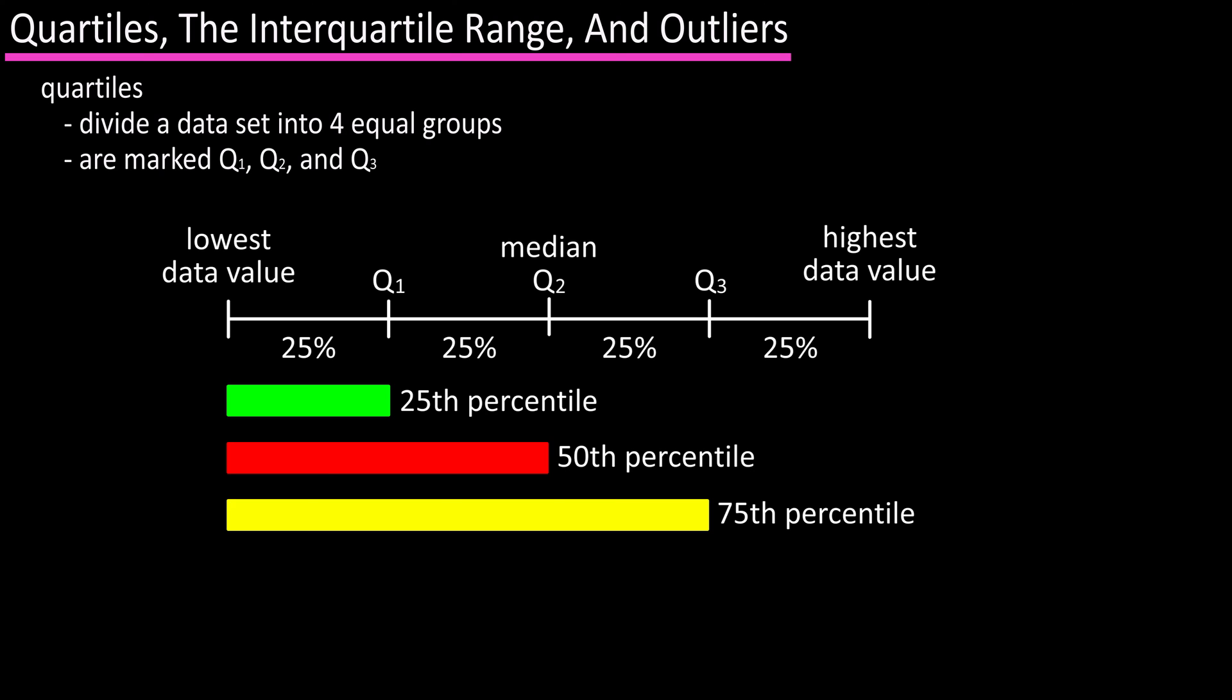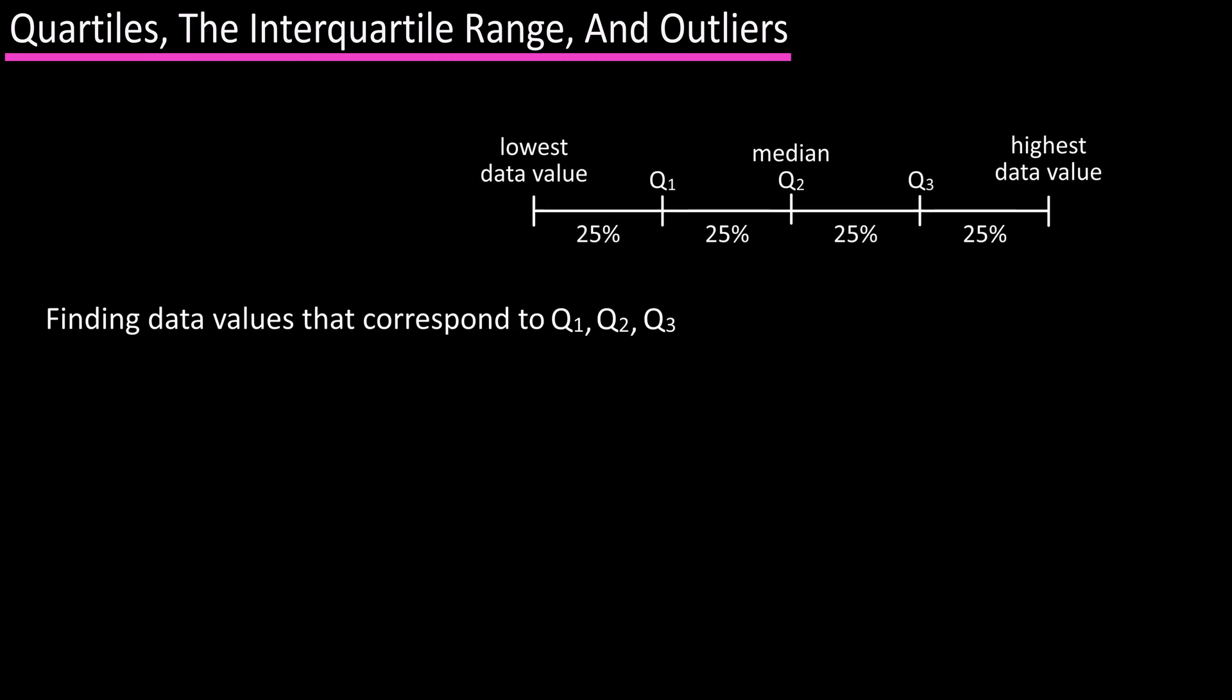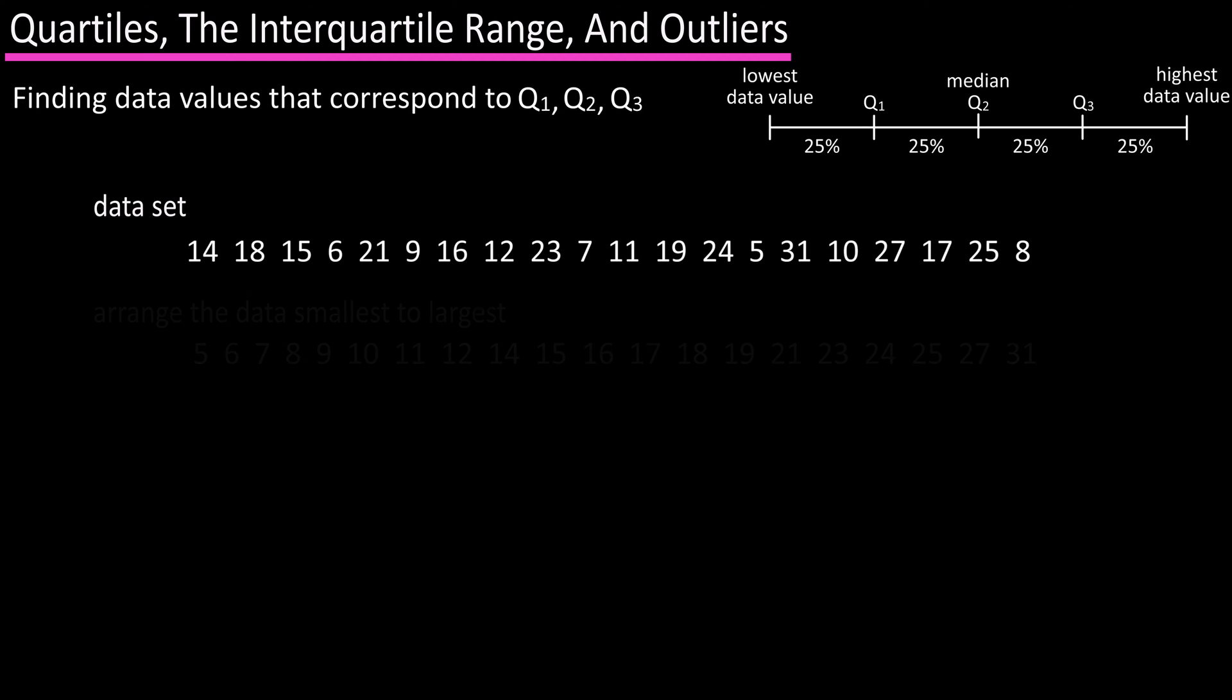There is a fairly simple way to find the data values of a data set that correspond to Q1, Q2, and Q3. Using a data set from an earlier video, we first arrange the data in order of smallest to largest. Next, we find the median of the data values, which will be the value of Q2.